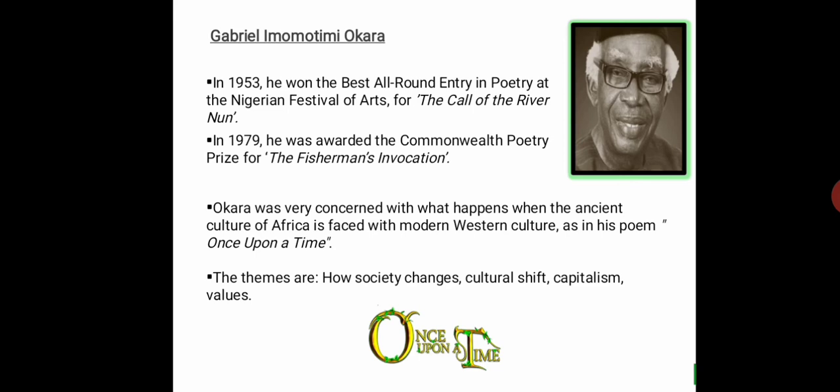Okara was very concerned with what happens when the ancient culture of Africa is faced with modern Western culture, as seen in his poem 'Once Upon a Time.' This poem explores how African people have experienced modernism and its impact. The main themes include how society changes, cultural shifts, capitalism, and changing values in human society.